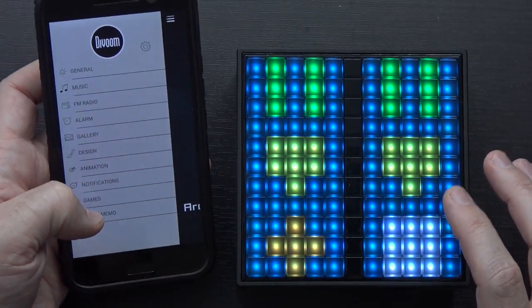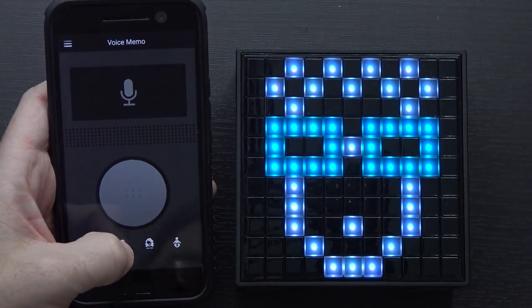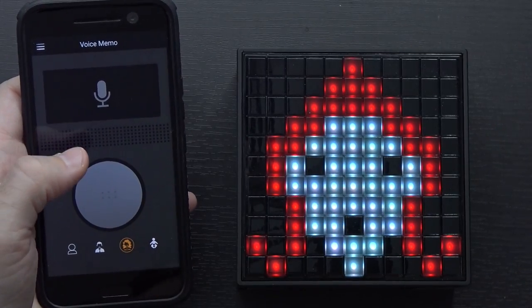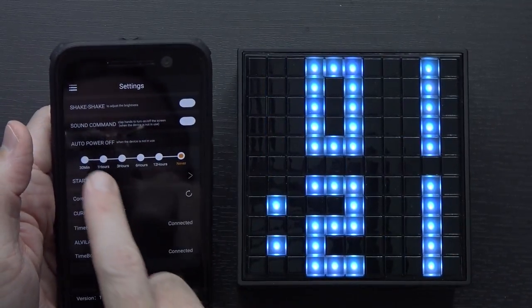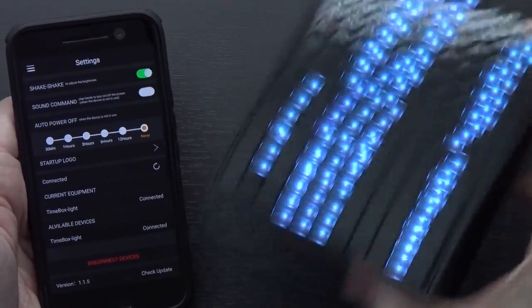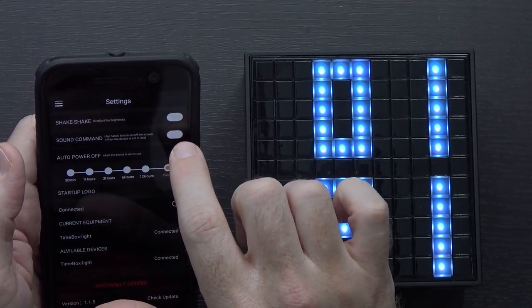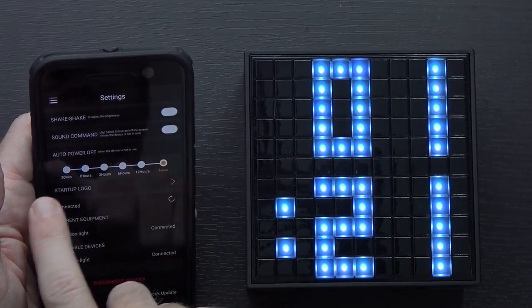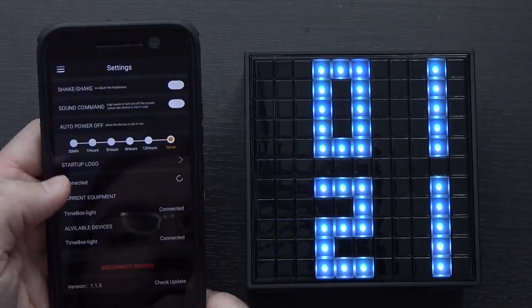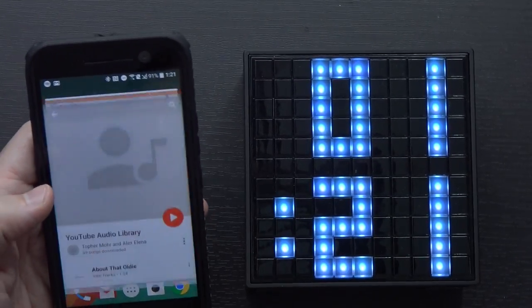There's apparently several different games you can play there. And voice memo, you can I would assume make voice memos to yourself. Hello can you hear me? Looking into the cogwheel here, you've got shake shake to adjust the brightness, you can turn that on and then when you shake it, it should make it brighter or dimmer. Sound command, clap your hands to turn on or off the screen. Auto power off, you can have it set to turn itself off after a certain amount of time. You can change the startup logo to a different one from the gallery if you want. There's info about what it's connected to, the current equipment and whatnot.